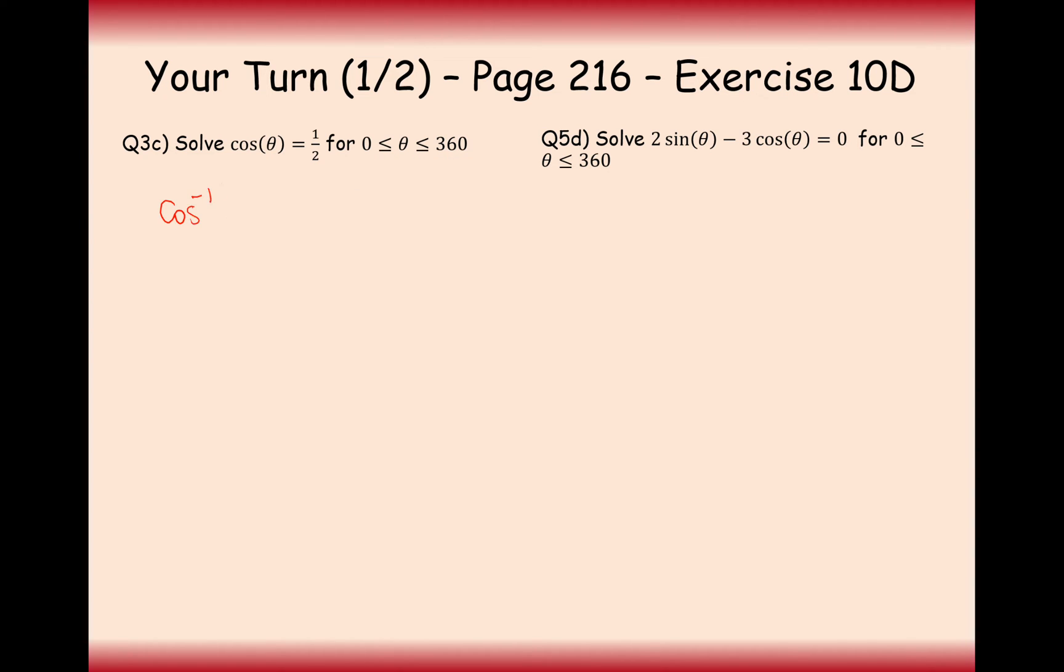So the first thing I would do here is cos minus 1 of a half. And from the video I learnt earlier, I get a value of 60 degrees here. Now, what we need to now do to get the second or possibly third or fourth solution is look at our graph in between 0 to 360. It's going to look something like this. 90 here, 180 here, 270 here and 360 here. A rough graph is all that's required. Look how quick I did that. That's all you need.